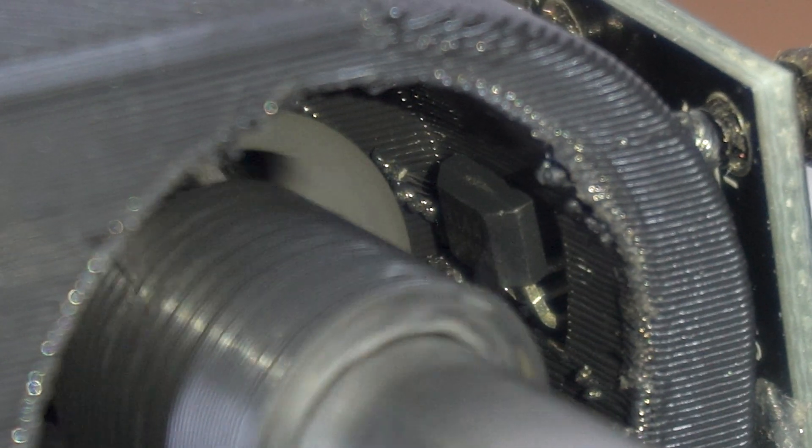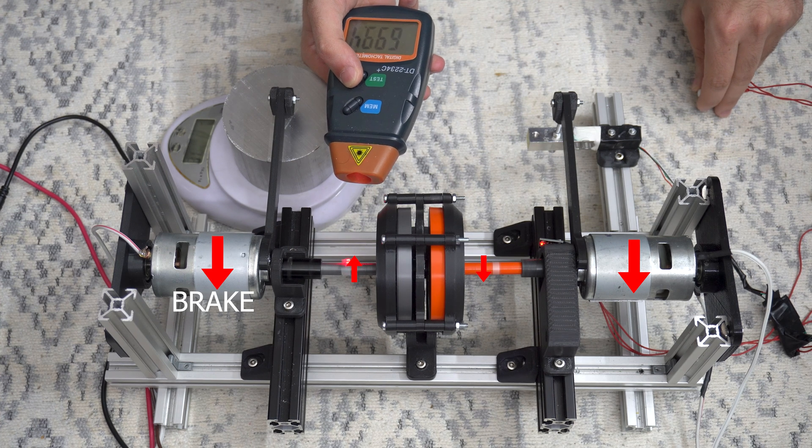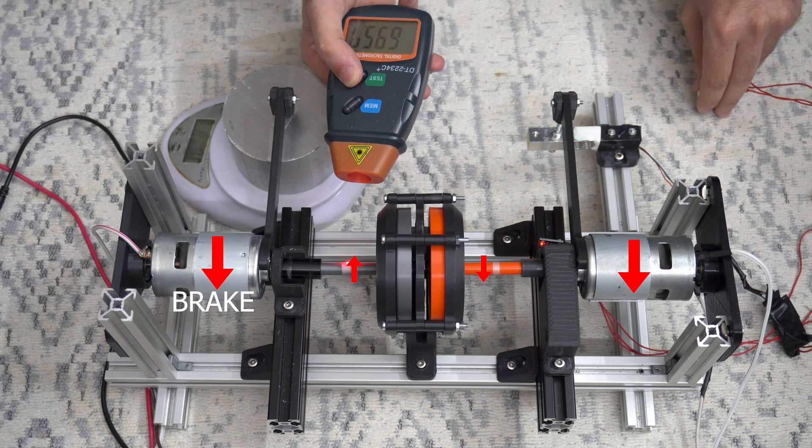And for braking, I run the motor in the opposite direction. This method allows to apply a load on the output shaft, while also being able to measure this load from the motor body.